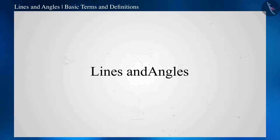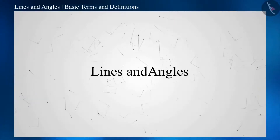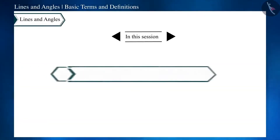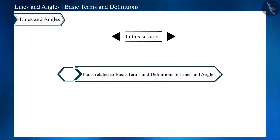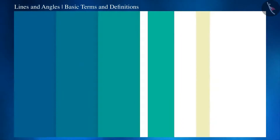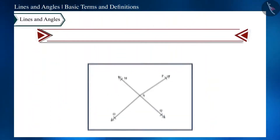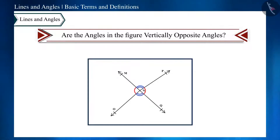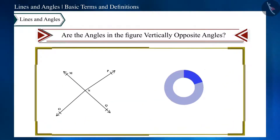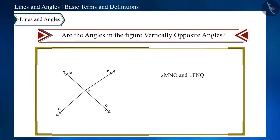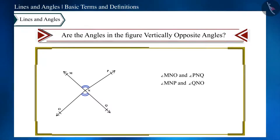Hello friends, welcome to this video on lines and angles. Today we will discuss some facts related to basic terms and definitions. First question: are the angles in the given figure vertically opposite angles? No — if you think that angle MNO and angle PNQ, and angle MNP and angle QNO are pairs of vertically opposite angles, you are wrong.